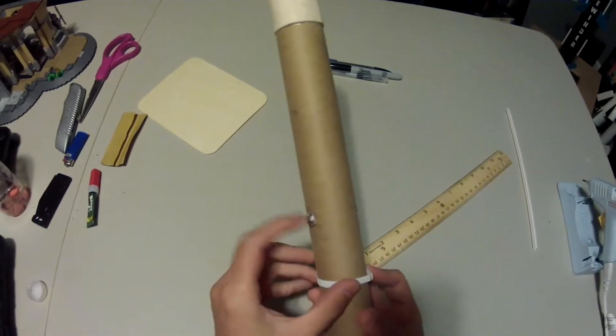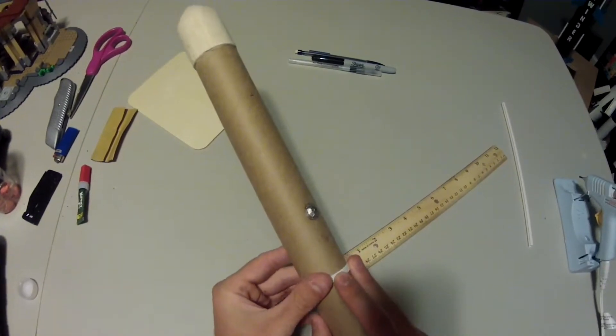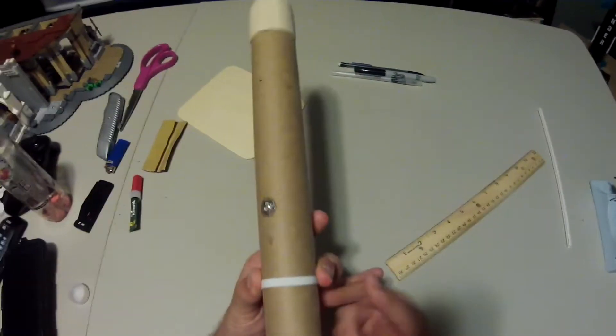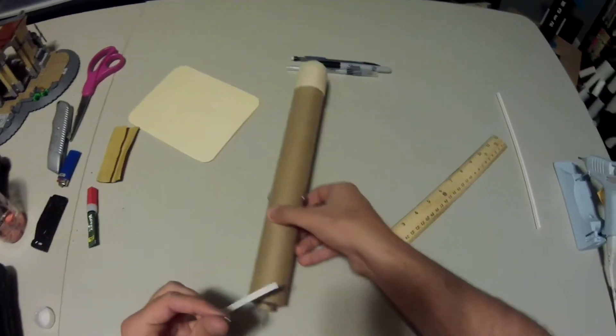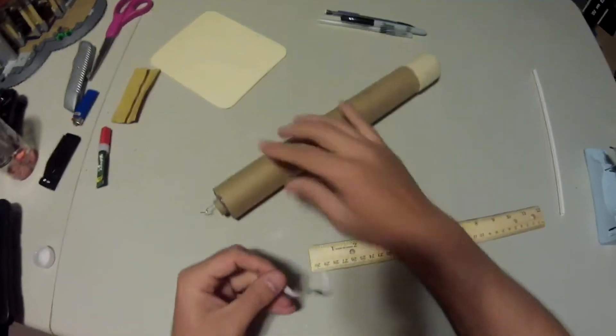The other thing we need is to evenly mark out where our fins are going to go around the circumference of our rocket tube. So we're going to use the same strategy as we used a few times by taking a strand of elastic and measuring it out on a ruler.